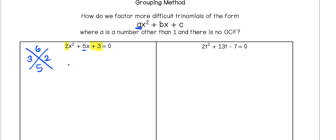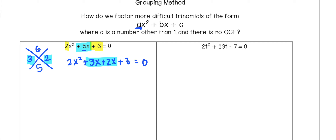Now we want to write this out as a polynomial with four terms. So 2X squared stays as it is. We take the two numbers we just found, 3 and 2, and break up 5X. We can say that's the same as 3X plus 2X, which makes 5X. Bringing down the plus 3 and setting it equal to 0, all we've done is broken up that middle term of 5X. Now we're going to use our grouping method, basically looking at this polynomial in two parts and finding the GCF of each binomial.